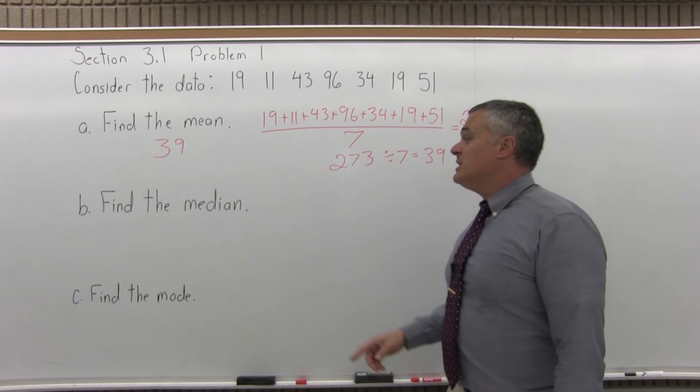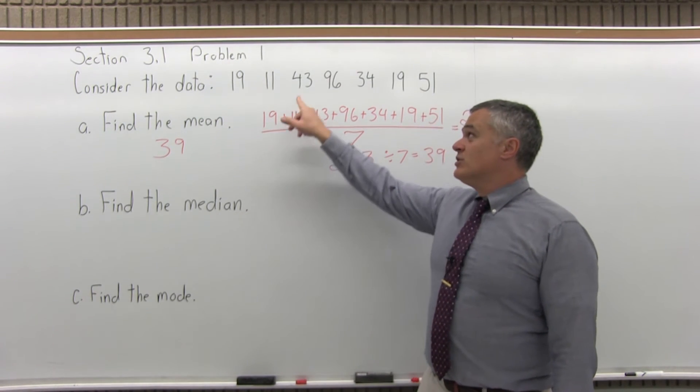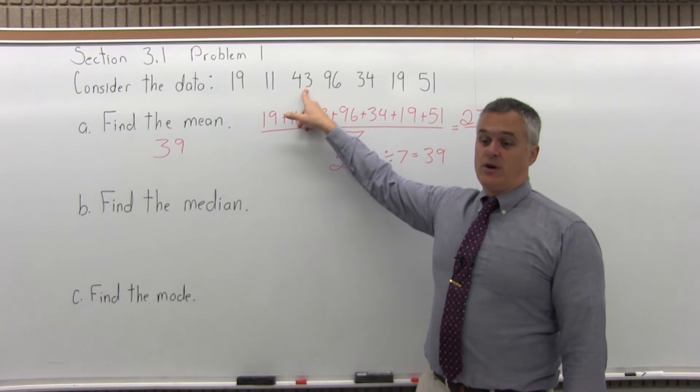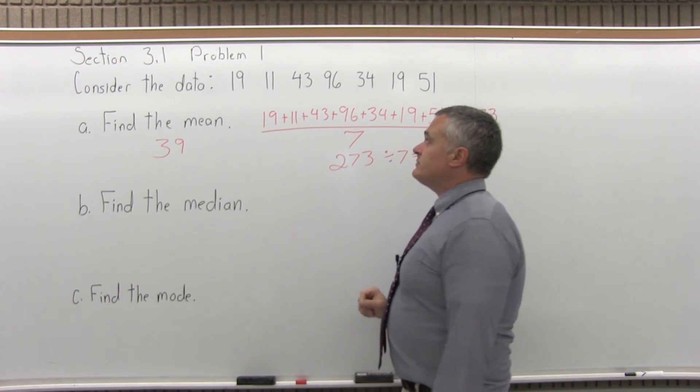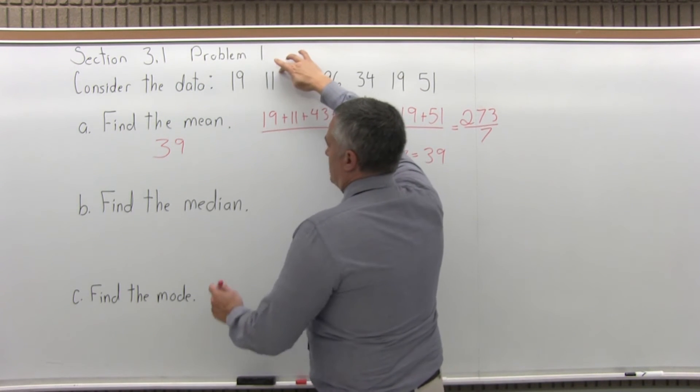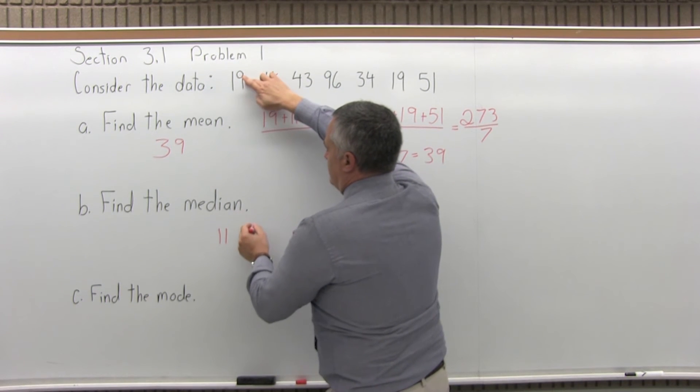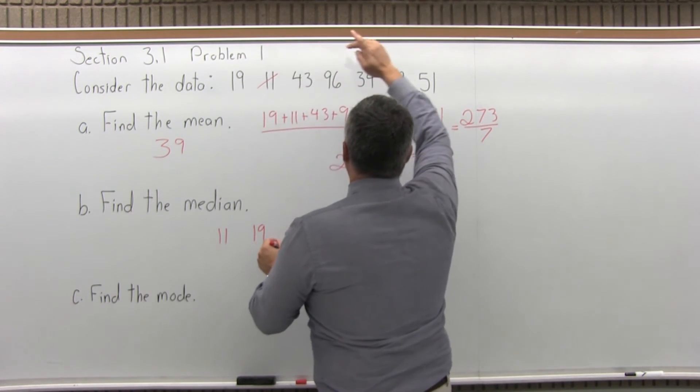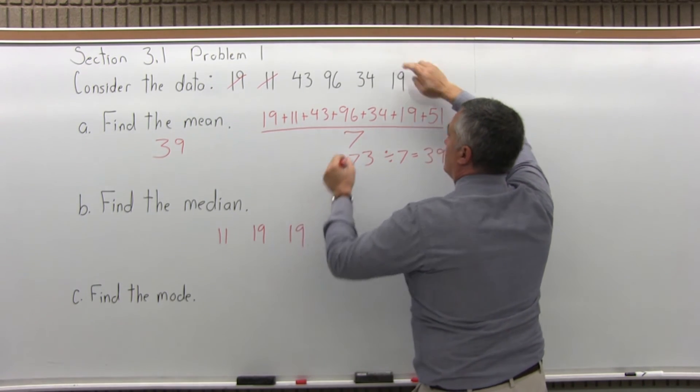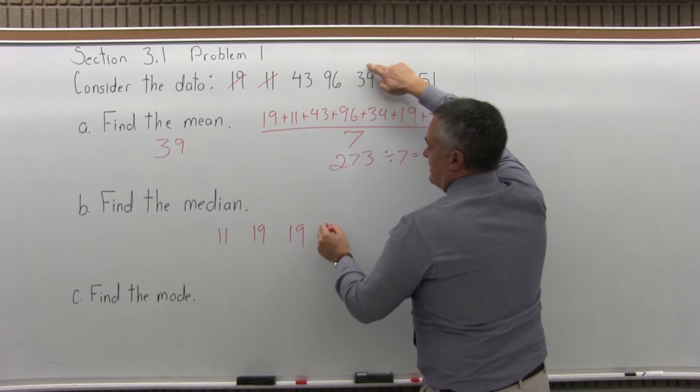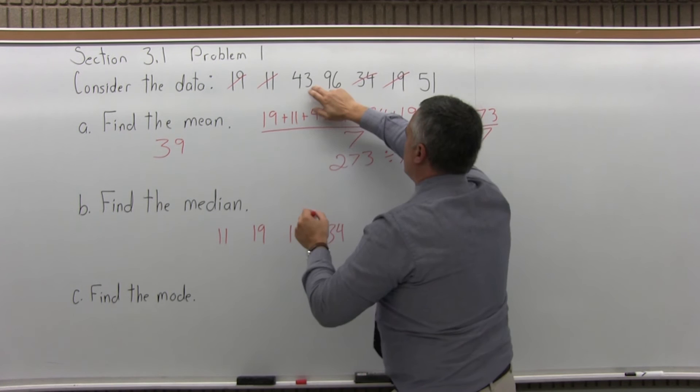Now, next, find the median. The median is the middle number in the list. So what we need to do is put this list in order, find out if we have an even or odd amount of data, and then find the middle. So the smallest data value is 11. The next is 19. Then we have 19 again. Then next is 34.